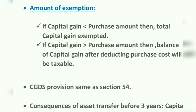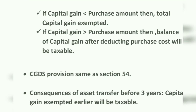The amount of exemption under Section 54G is the same as Section 54D. If the purchase amount is greater than the capital gain, the whole capital gain amount will be exempted. If the capital gain is greater than the purchase amount, the capital gain after deducting the purchase cost will be taxable. The CGDS provision is the same as Section 54.